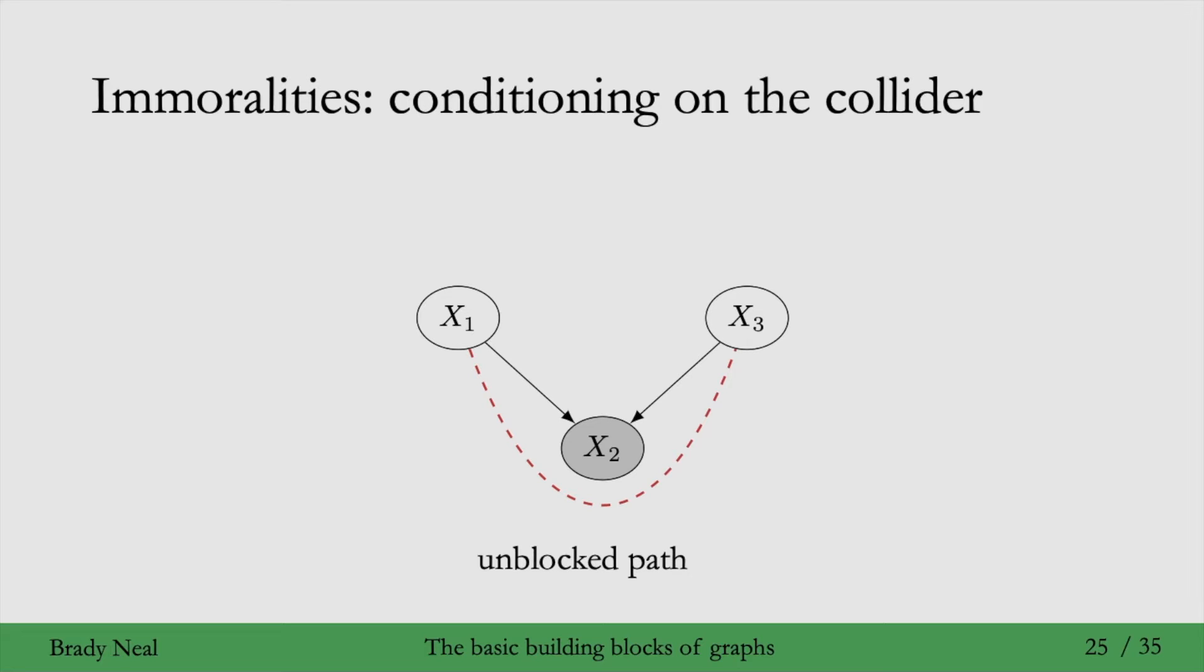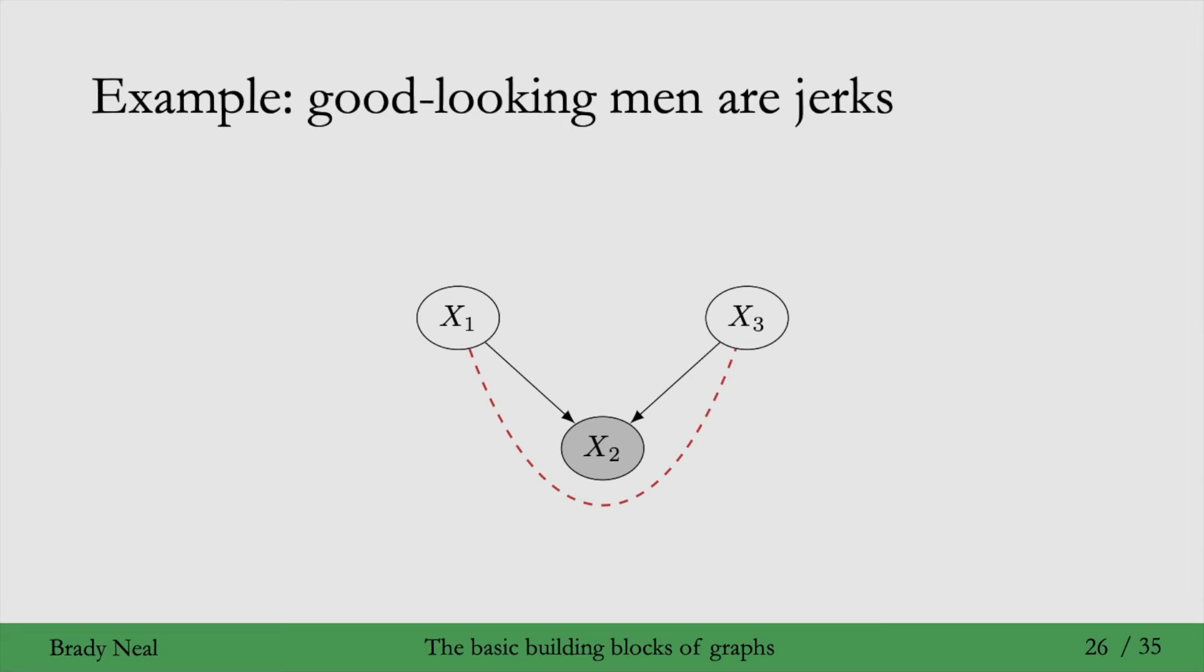To give you some intuition for this, we'll use an example of the perception that good-looking men are jerks. So, say that good-looking is x1 and kindness is x3.